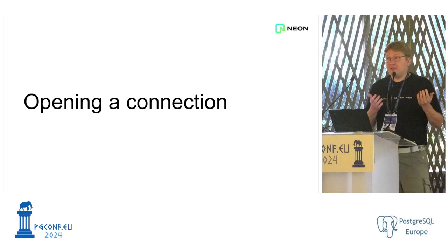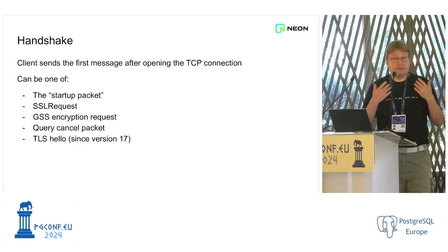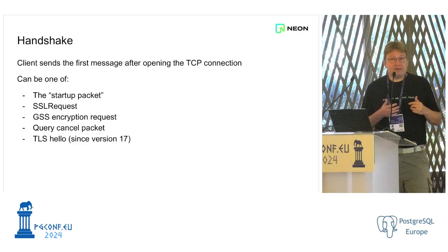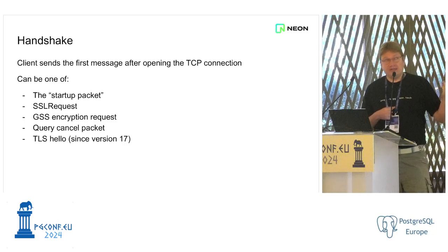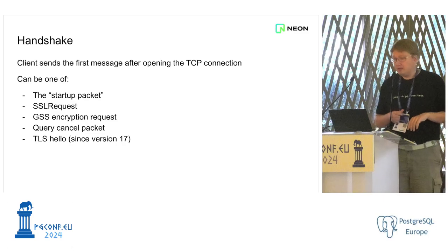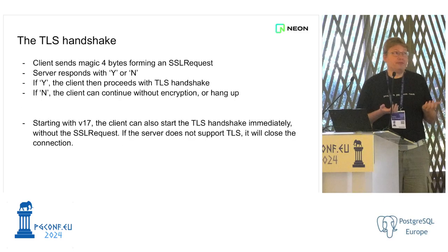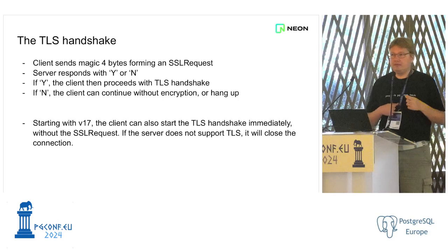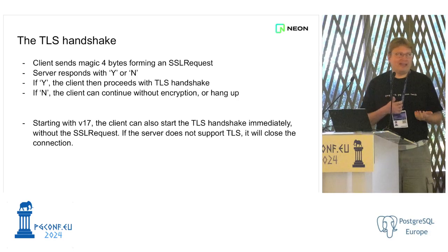Let's start by looking at what happens when you open a new connection to Postgres. You open a TCP connection first, or maybe a Unix domain socket, but probably TCP. The first thing that happens is the client sends the first message, which can be one of several options. If you're using TLS, you'll probably send an SSL request message first. The client sends an SSL request to the server, and the server responds with yes or no on whether it can do TLS. Then the client has the option to continue or hang up.